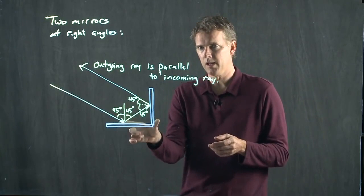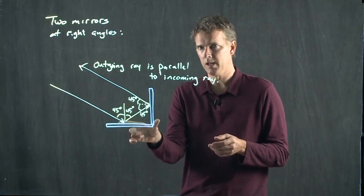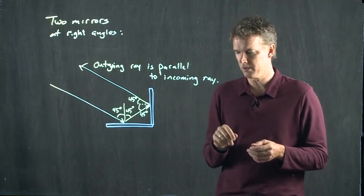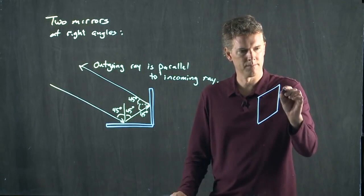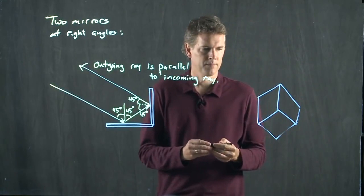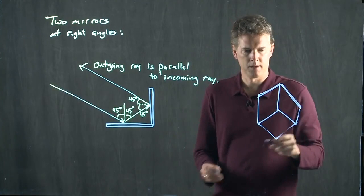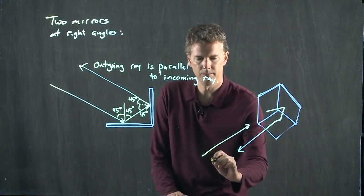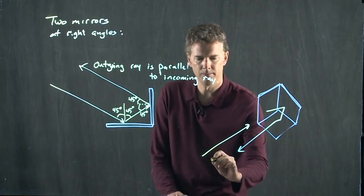Let's say we didn't just do this in two dimensions. Let's say we did it in three dimensions. If you do it in three dimensions, it's called a corner cube. And now any incoming ray will bounce three times and come out parallel.